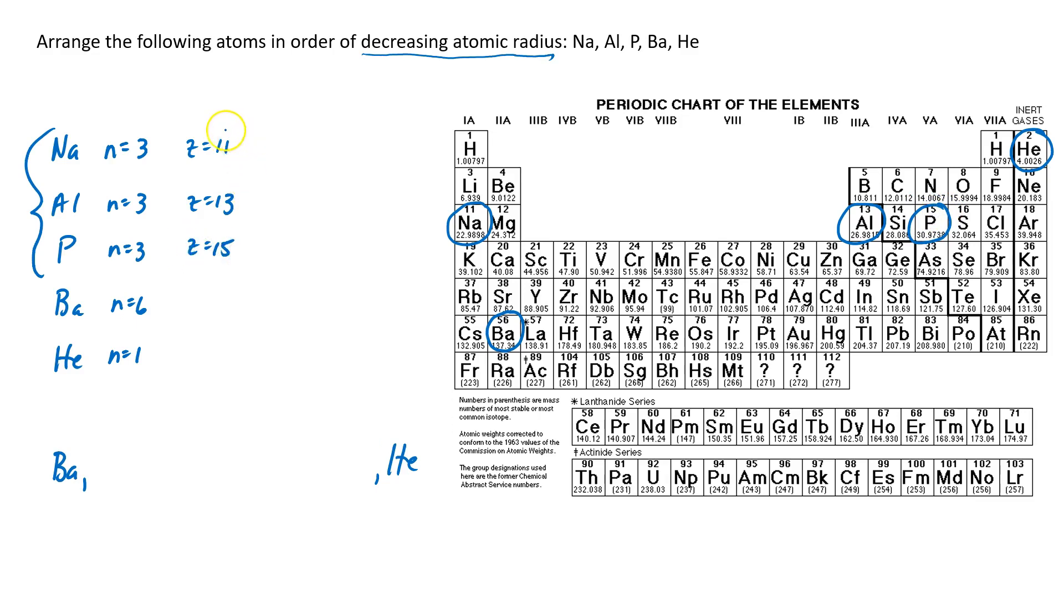Now why is the atomic number important? Remember, these are the number of protons in the nucleus. And the higher that positive charge in the nucleus, the more effectively that nucleus is pulling electrons closer to it. So this higher positive charge on the nucleus means this atom is smaller. So if we're arranging in order of decreasing atomic radius, it's sodium, then aluminum,